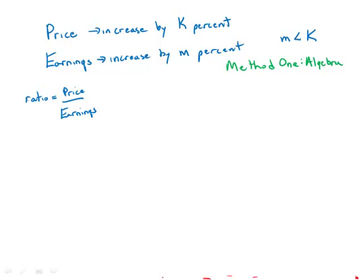Last year the price per share of stock X increased by K percent and the earnings per share of stock X increased by M percent, where K is greater than M. By what percent did the ratio of price per share to earnings per share increase in terms of K and M?